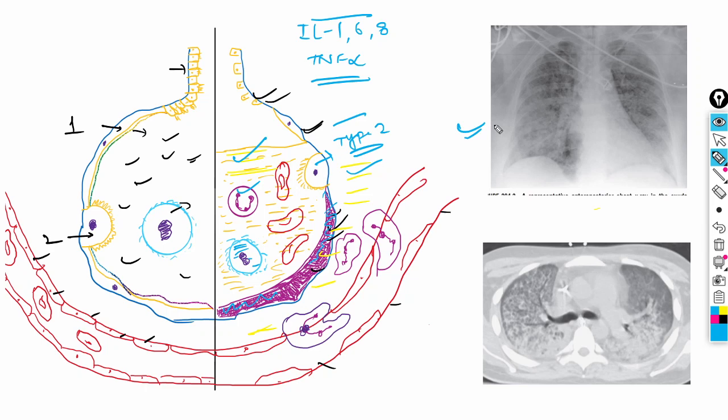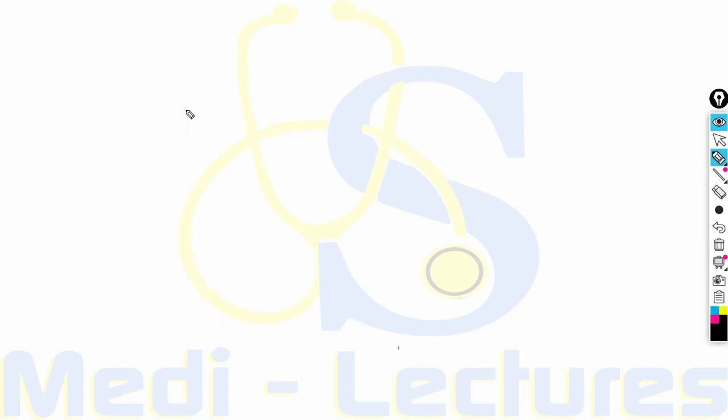A chest X-ray in the exudative phase of ARDS shows bilateral opacities consistent with pulmonary edema that are difficult to distinguish from left ventricular failure. An HRCT thorax in the exudative phase shows pulmonary edema in the dependent portion of the lungs, with relatively normal airspace in the non-dependent upper portions.